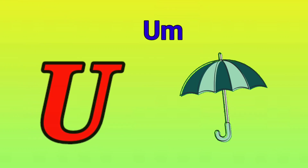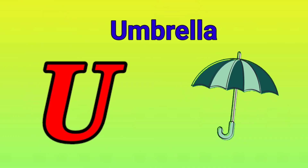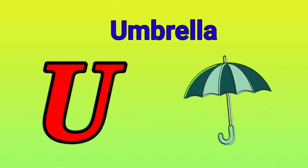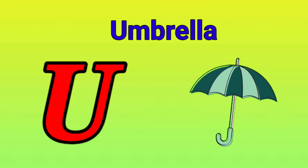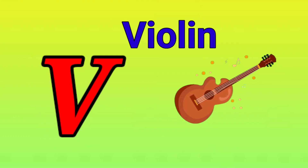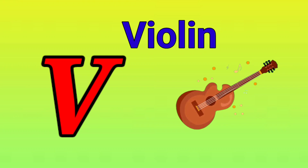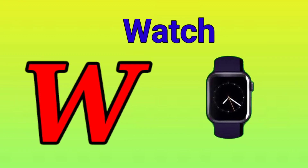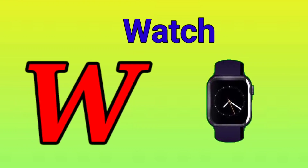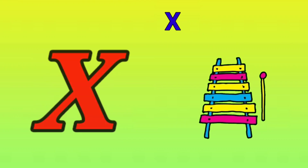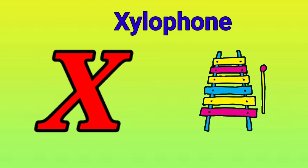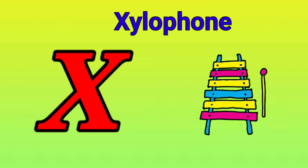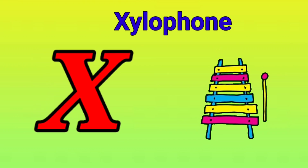U is for umbrella, u-u-umbrella. V is for violin, v-v-violin. W is for watch, w-w-watch. X is for xylophone, x-x-xylophone.